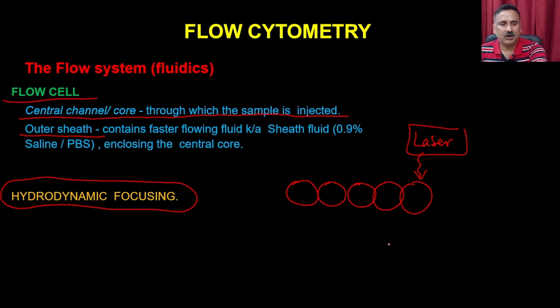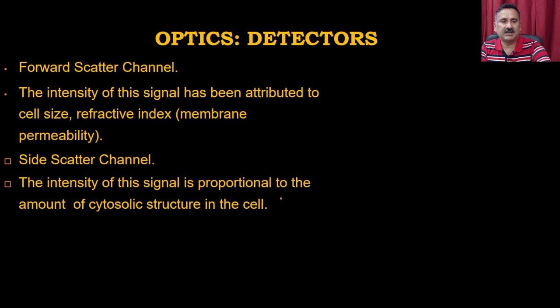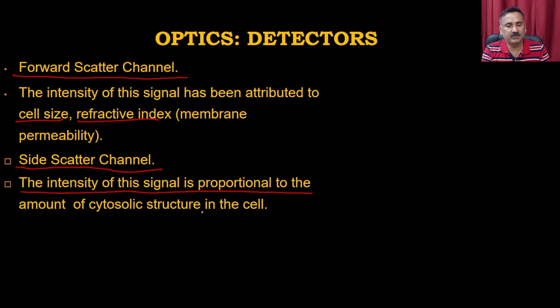The optical system uses a laser beam or arc beam as a light source, including argon lasers that give 488 nm wavelength. Modern flow cytometers can have multiple laser types such as 488 nm and 280 nm, making analysis more robust. Detectors for forward scattering measure cell size and refractive index, while side scatter detectors measure the intensity representing the solid content or granularity of cells.